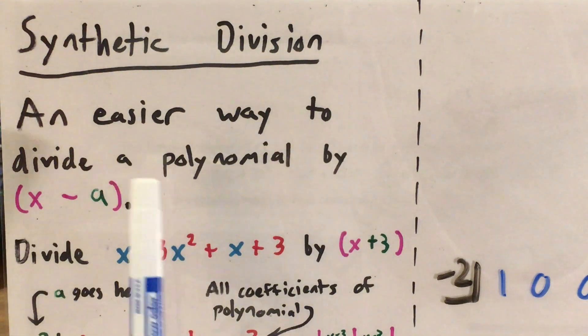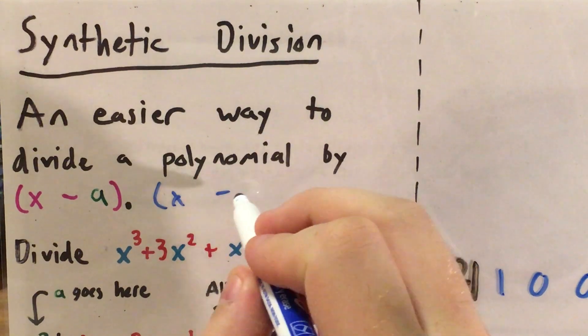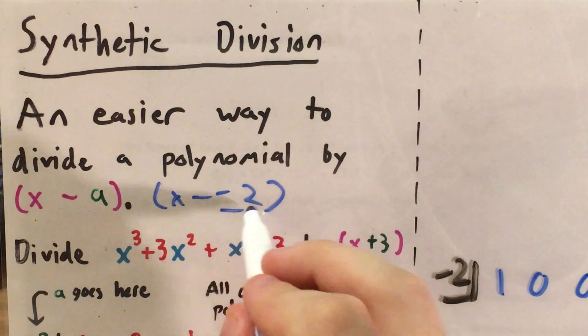And the other math skill I'm going to use is called synthetic division. Now this is an easier way to divide a polynomial by a linear factor, such as x minus negative 2. So negative 2 is my a.